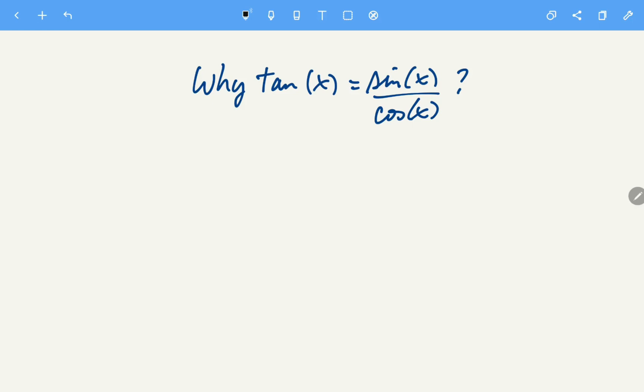Why tangent of x equals sine of x over cosine of x. So we're going to start with the right triangle.